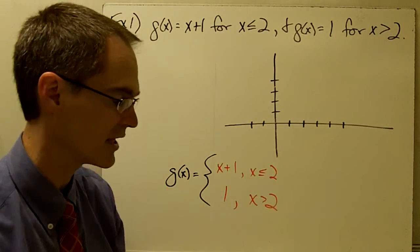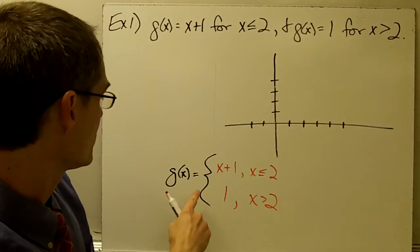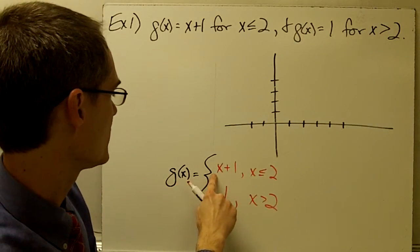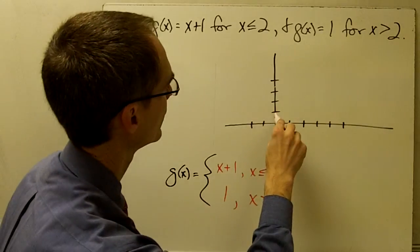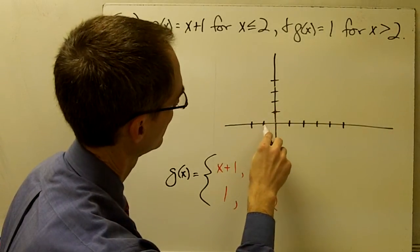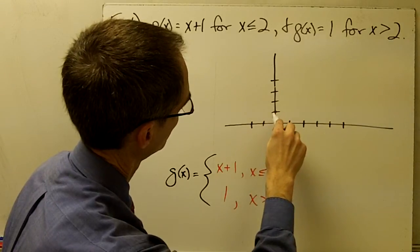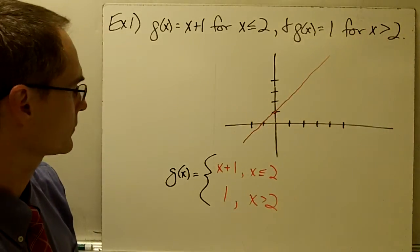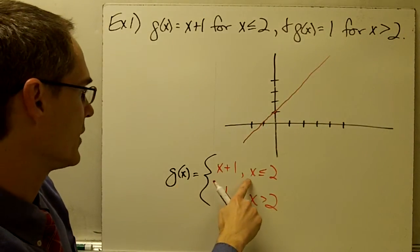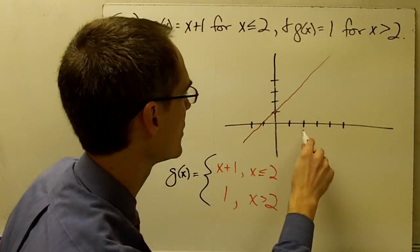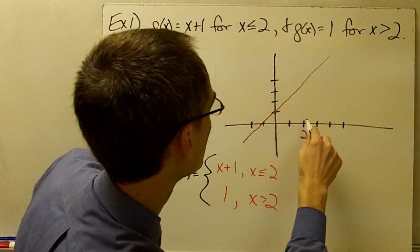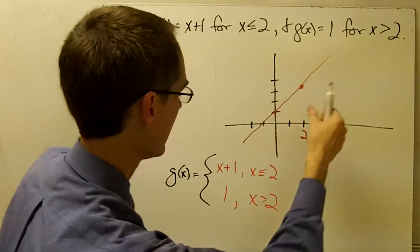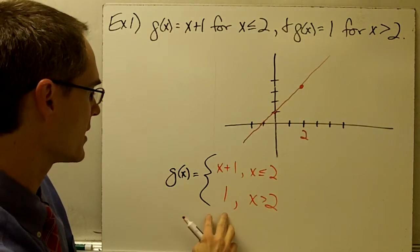Now I want to graph the function. g of x equals x plus 1 is a linear function with slope of 1 and y-intercept of 1, so it goes through here with slope of 1. That part looks something like that. But that's only going to be for x less than or equal to 2, so it only goes up to right here. Then I have a different piece of the function.